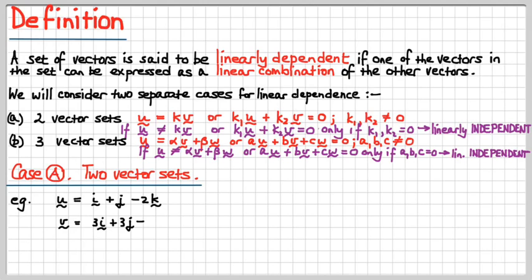Two vector sets, here we go. A real-life example. So u in this case is i plus j minus 2k, and v is 3i plus 3j minus 6k. Now look, cast your eye over those two vectors and tell me, what do you see? What is remarkable about those two vectors? Yes, you can see that u is one-third of v.